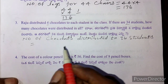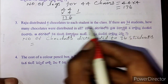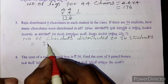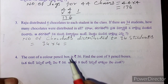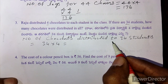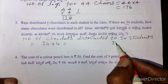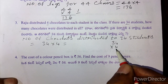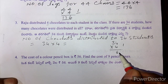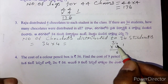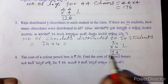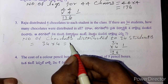Number of chocolates is equal to 34 into 4. Four fours are 16, 4 threes are 12, 12 plus 1 is 13, and the answer is 136 chocolates.